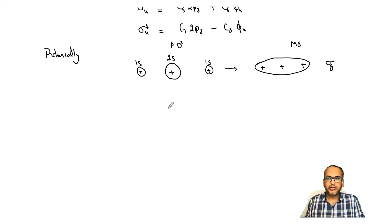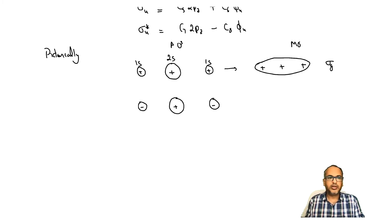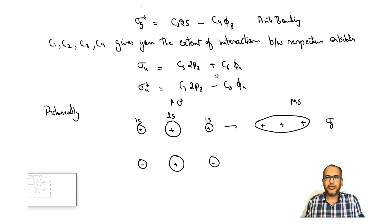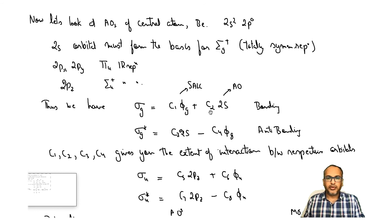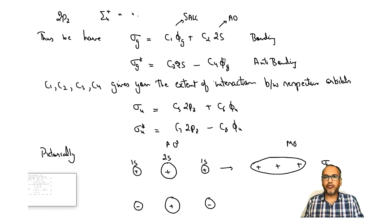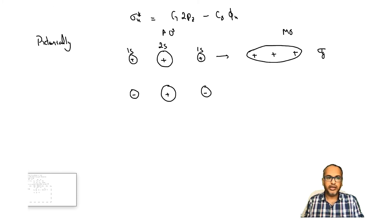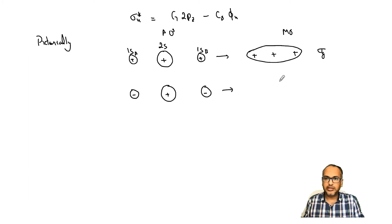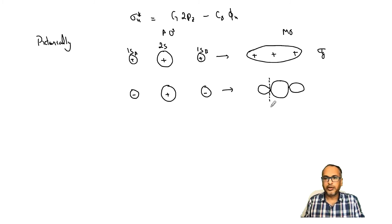For σg*, we have the 2s orbital as positive but φg enters with a negative sign. Since φg = 1sa + 1sb, both 1sa and 1sb must go negative. The positive 2s phase and negative hydrogen phases result in a node formation between the central atom and each hydrogen, giving an anti-bonding σg* orbital with a plus lobe and a minus lobe separated by a node.